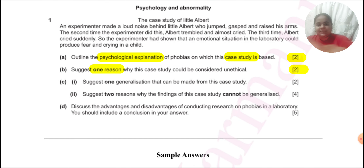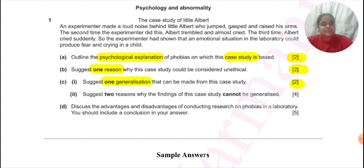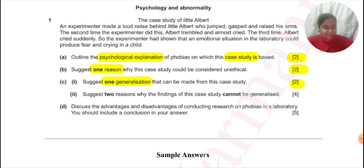The next question asks for one generalization that can be made from this case study, again for two marks. A mistake students make is to assume generalization only means applying results from a sample to the population. Generalization has two meanings: one is extending results from a sample to a target population; the other is extending results from the context of the study to real-world settings — that is external generalizability, or what we often call ecological validity. When generalization is asked for, we need not restrict ourselves to sample-to-population generalization.